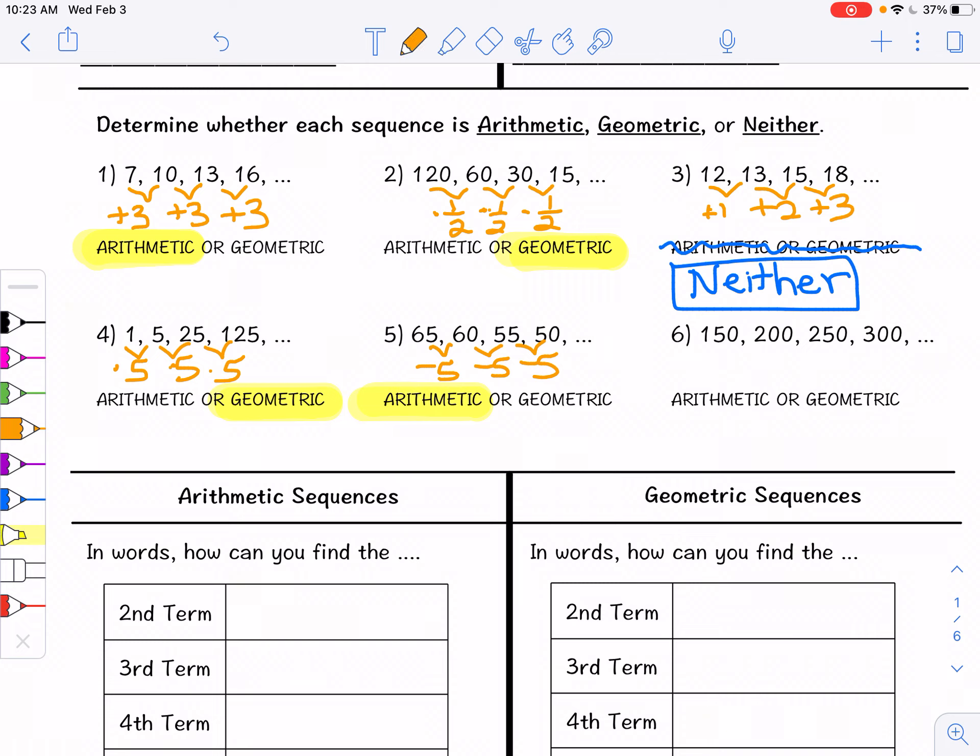Lastly, we have 150, 200, 250, 300. We are adding 50 every time. Remember adding starts with A and so does arithmetic. So we do have an arithmetic sequence.